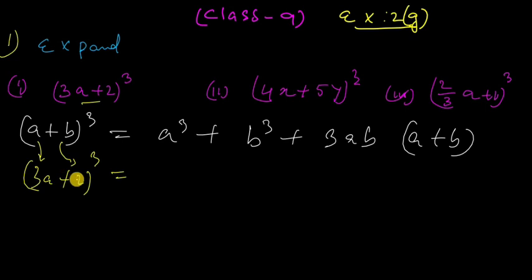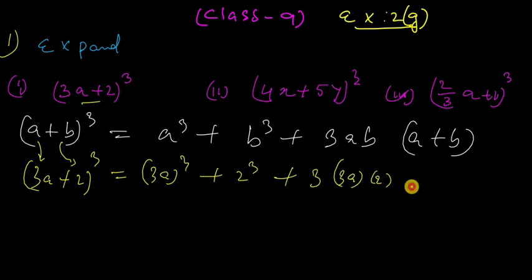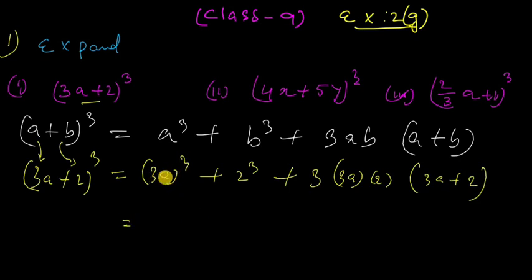So with A equal to 3A and B equal to 2, we expand: 3A whole cube, plus 2 cube, plus 3 times 3A squared times 2, plus 3 times 3A times 2 squared. Let's simplify this.